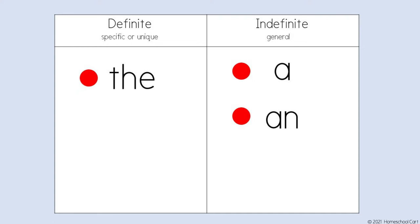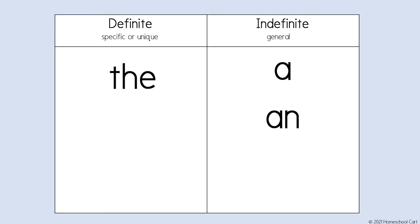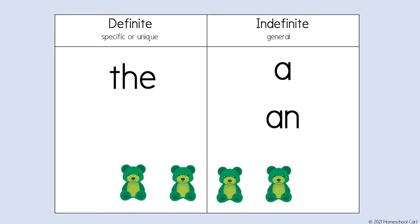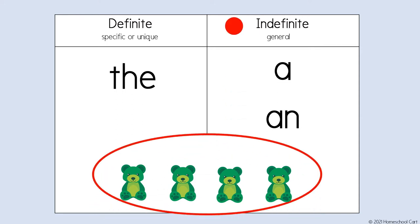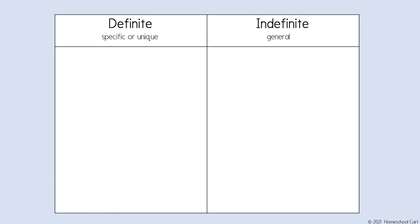I'll show you an example. We use the definite article, the, to refer to a specific or a particular thing. We use the indefinite articles, a or an, to refer to a general thing. Let's say I have some teddy bears and you would like one, but you don't really care which one you get. We would use the indefinite article: a teddy bear.